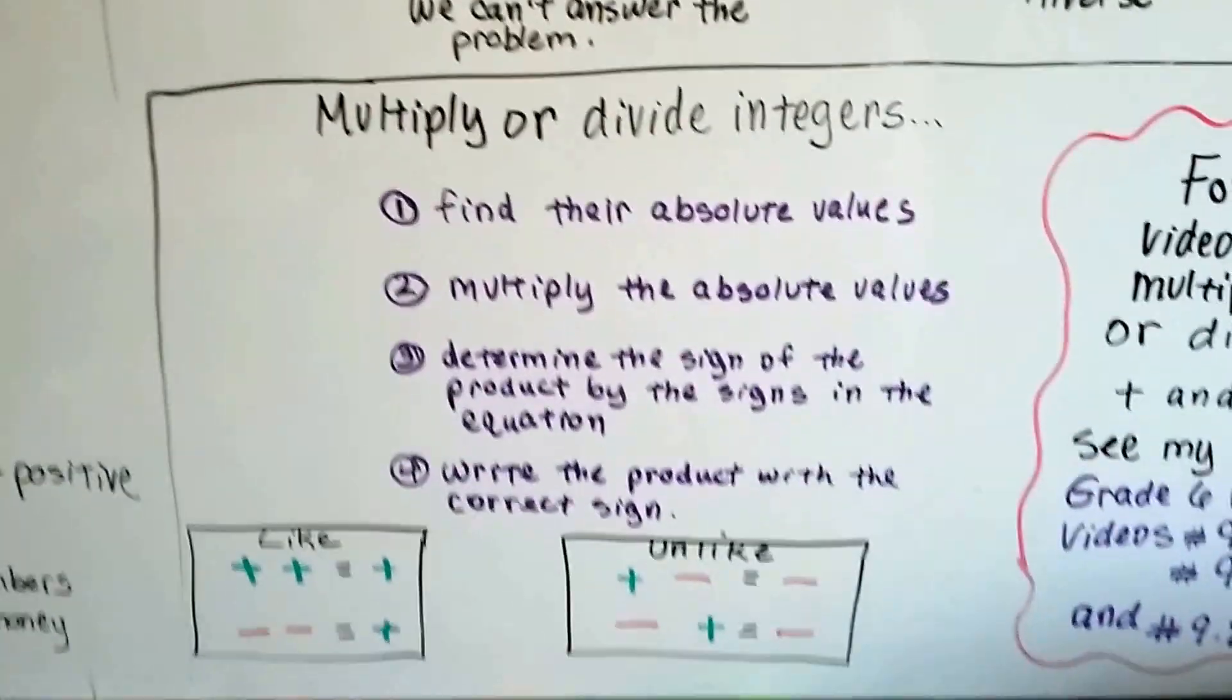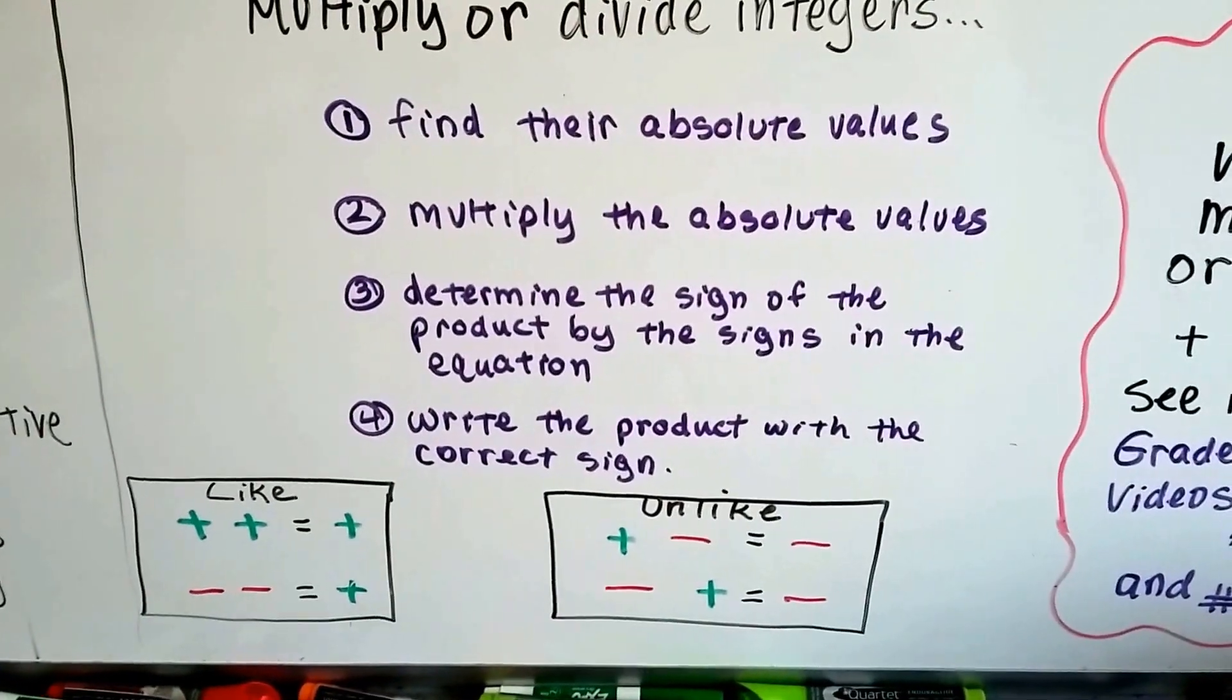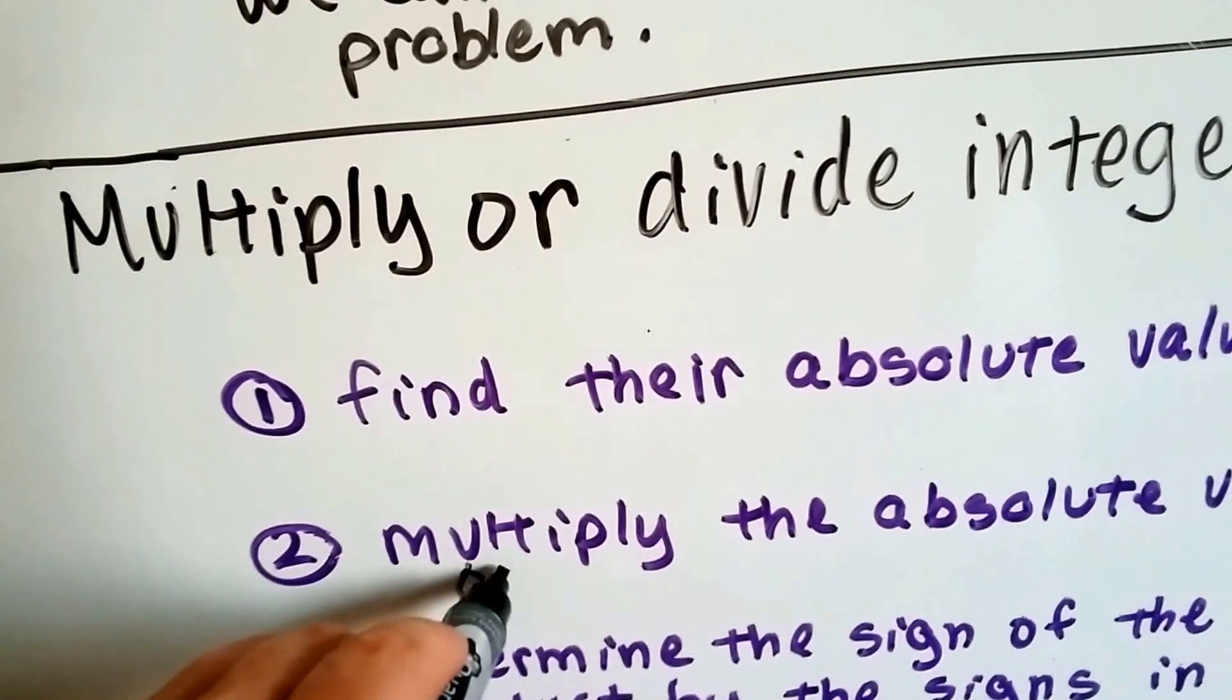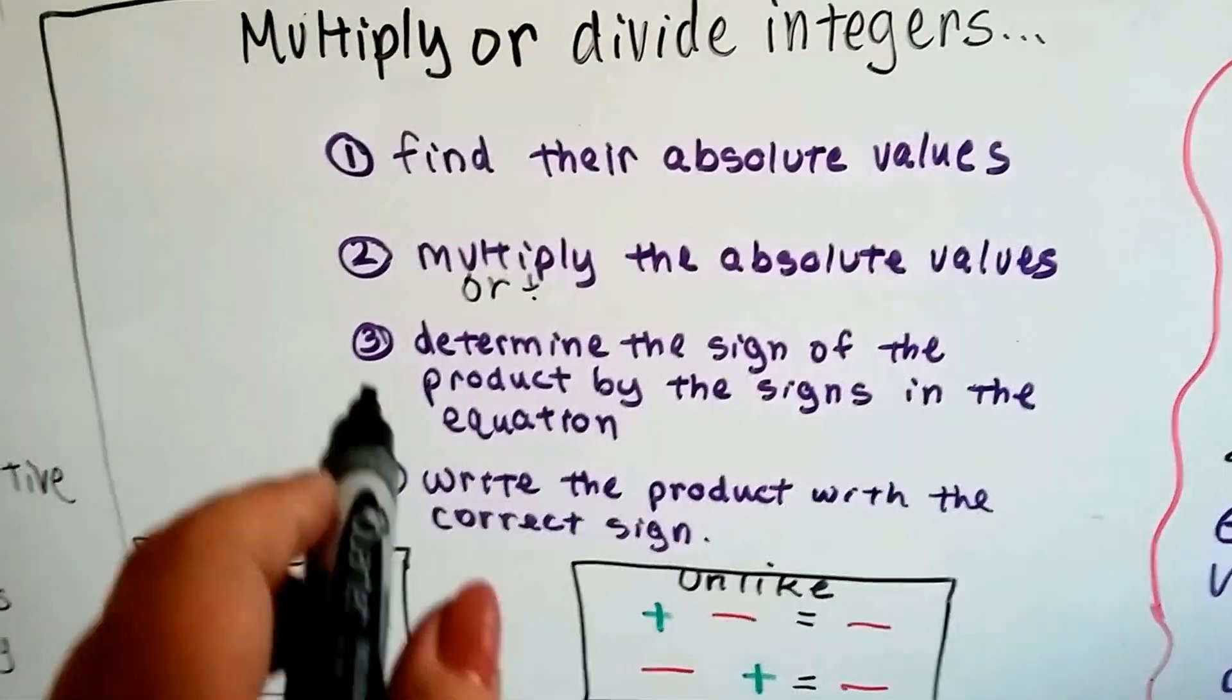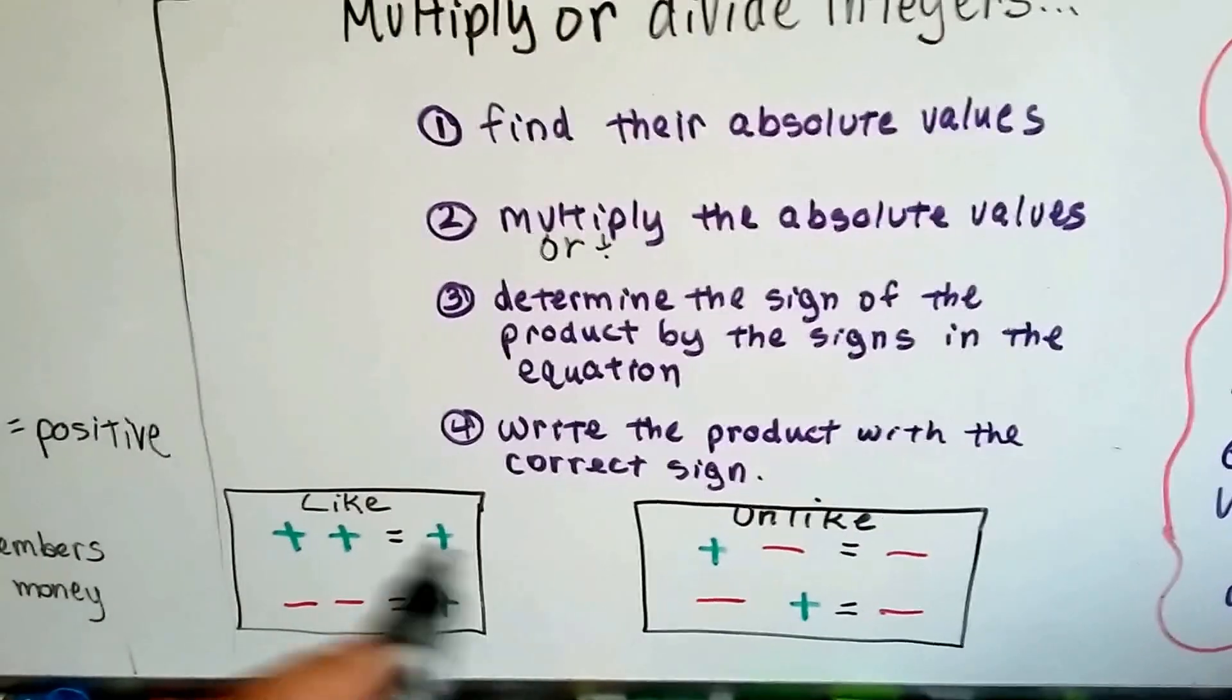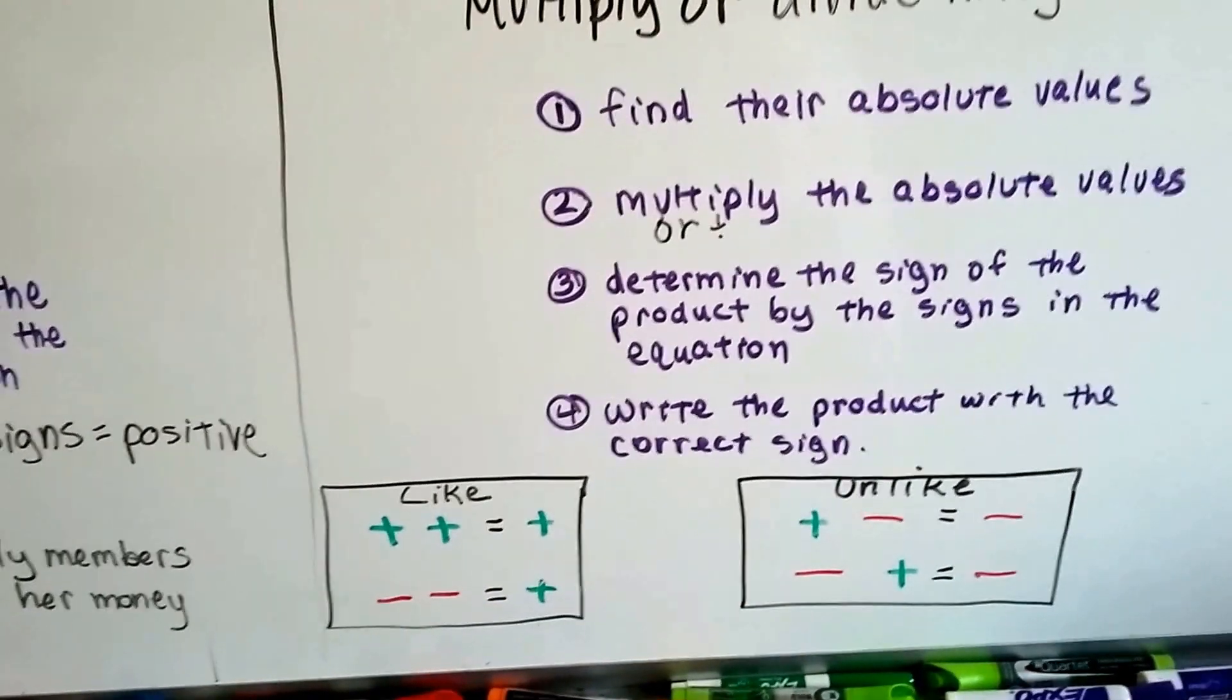So, this is what you need to take away and remember. That when we multiply or divide integers, we find their absolute values. Then, we multiply or divide, right, that absolute value. We determine the sign of the product, or the quotient, by looking at the equation to see if they're unlike or like. And then, we write the product or the quotient with the correct sign. Okay?